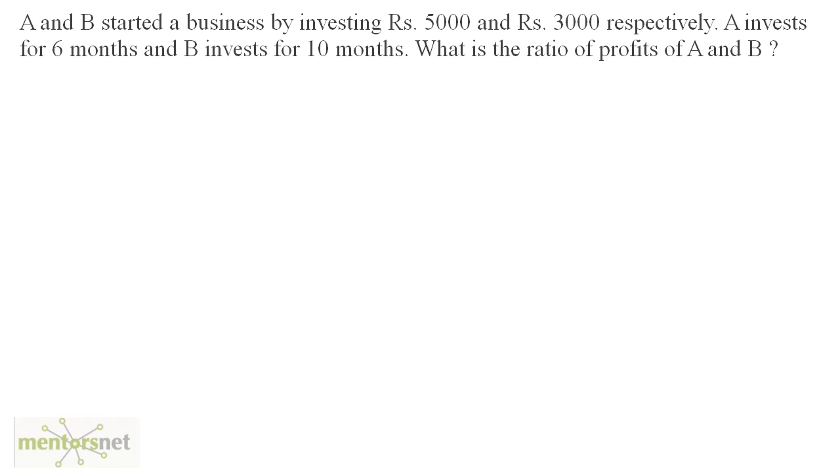Let's gather the data now. We have A who invests five thousand rupees, and these five thousand rupees are invested for six months. Coming to B, he invests three thousand rupees for a period of ten months. So according to our terminology, this is X, this is Y, the amount invested by A and B, and this is P and this is Q.